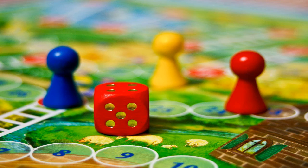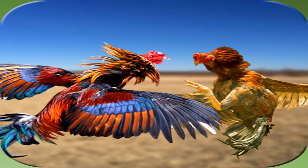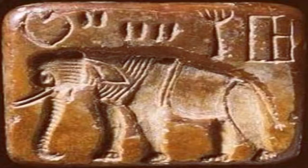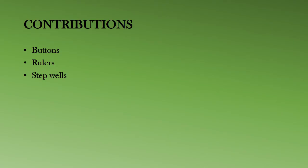You can see pictures of board games and cock-fighting. Now, language and writing: their earliest writing was through a pictographic script. These pictures were images of animals such as elephant, rhinoceros, crocodile, and bull. The script would be on top with the animal motif below it.